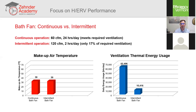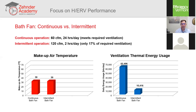With a continuous bath fan at 60 CFM and a 40-degree lift from 30°F to 70°F, you're looking at 62,000 BTUs per day. If instead you use the bath fan intermittently — two hours a day at 120 CFM — you're only getting 17% of your required ventilation, with makeup air still coming in at 30 degrees. You've reduced the heating cost, now looking at only 10,000 BTUs per day.